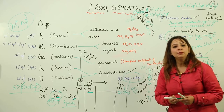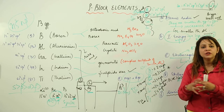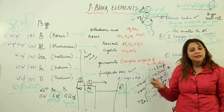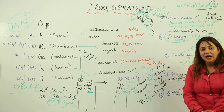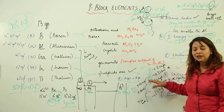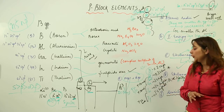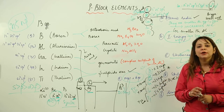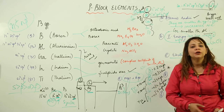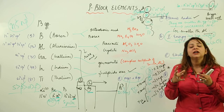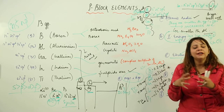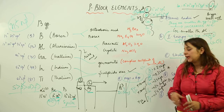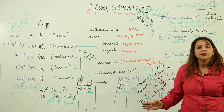For melting and boiling points: boron, being smaller, has high melting and boiling points. Aluminium, being bigger, has lower melting and boiling points. However, as we move further down the group, size decreases due to increasing nuclear charge, so melting and boiling points increase going down the group. This is all about the physical properties of Group 13 elements.